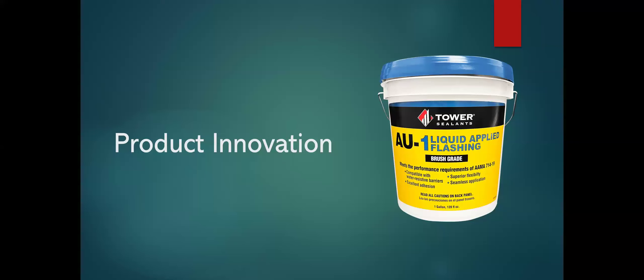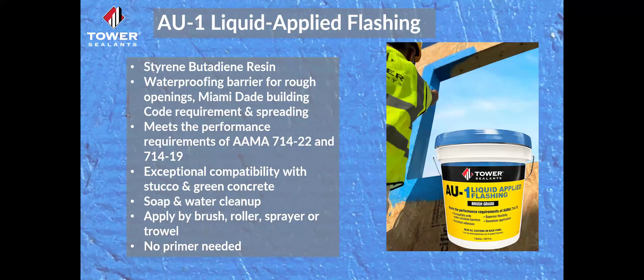Now for our product innovation: the AU1 liquid applied flashing. This is a styrene-butadiene resin waterproof barrier for rough openings. It started as a Miami-Dade building code requirement under AMA 714-22 and 714-19, but has spread throughout Florida and is now seen in almost every U.S. state as extra insurance against wind-driven rain. It's compatible with green concrete, uses soap-and-water cleanup, and can be brush, roll, spray, or trowel applied with no primer needed.